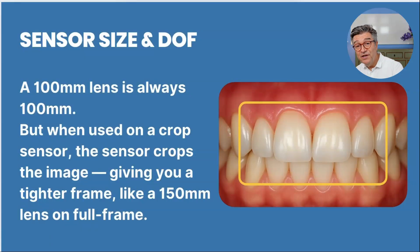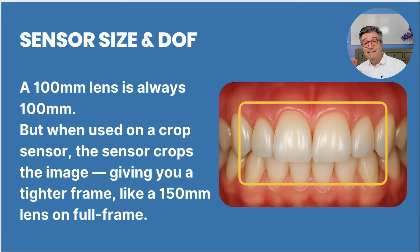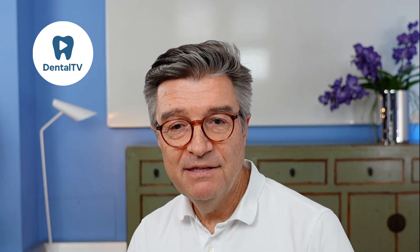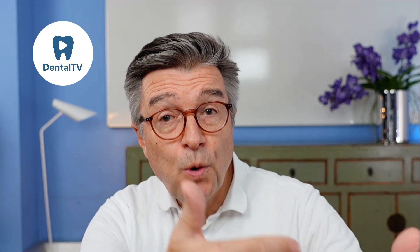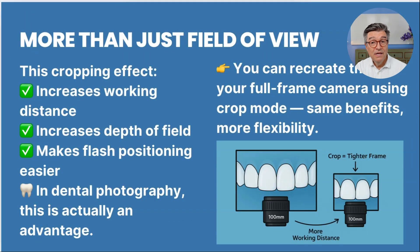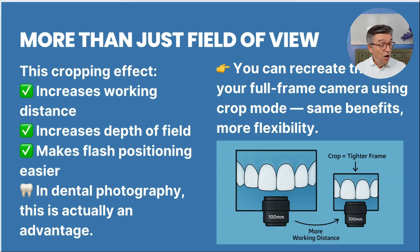A 100mm lens is always 100mm, but if you use it on a crop sensor it becomes a longer effective focal length. For example, Nikon and Sony have a 1.5x crop, and Canon has a 1.6x crop — so 100mm becomes 150mm or 160mm respectively. This cropping effect increases working distance, increases depth of field, and makes light control even better. I recommend giving it a try — if you have a full frame camera, shoot in crop mode. On all camera brands you can switch to APS-C mode, especially in the latest generation of mirrorless cameras.